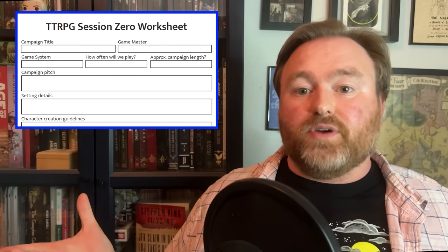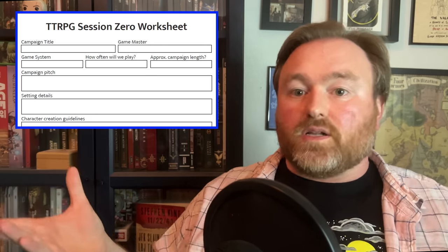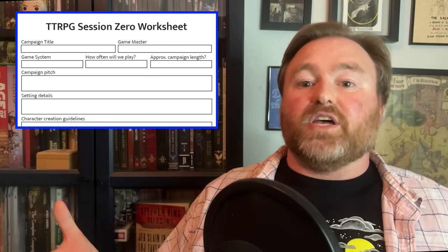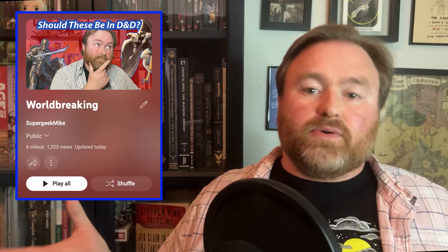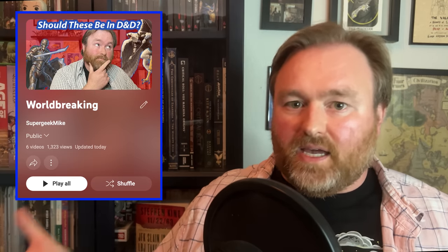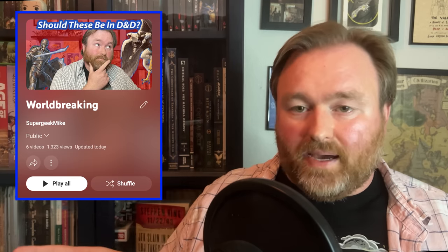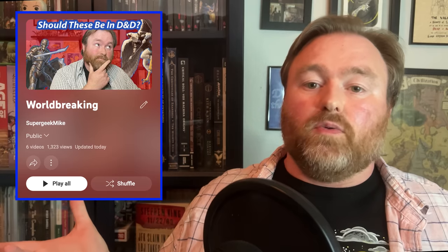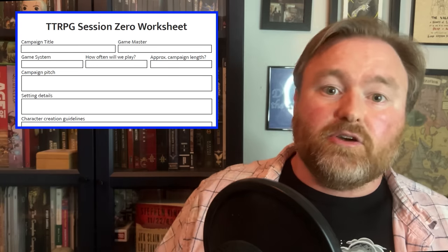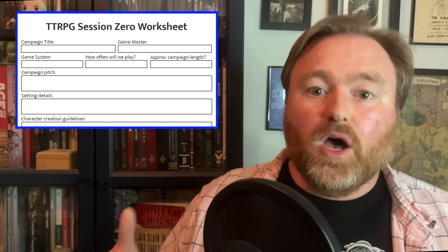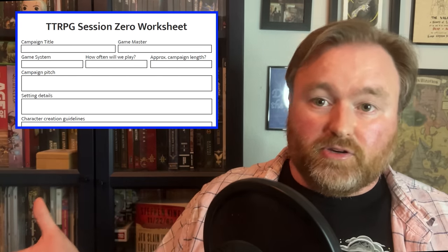Then we get a section on the character creation guidelines. Some examples you can include here might be things like how we generate our character statistics, and whether there are any books or resources that are off limits. You should make sure your players know whether or not third party content is permitted, and whether you're banning certain races, subclasses, spells, or whatever the equivalents might be for whatever game system you're playing. This sheet is system agnostic. Additionally, here might be a good place to include a link to any virtual tabletop or online character creator portal your players might need.